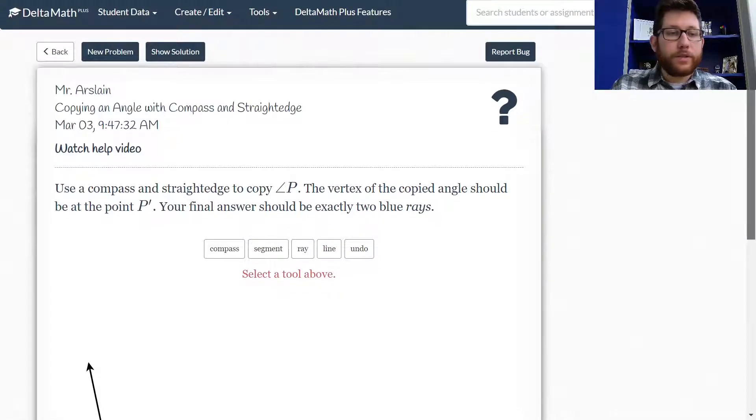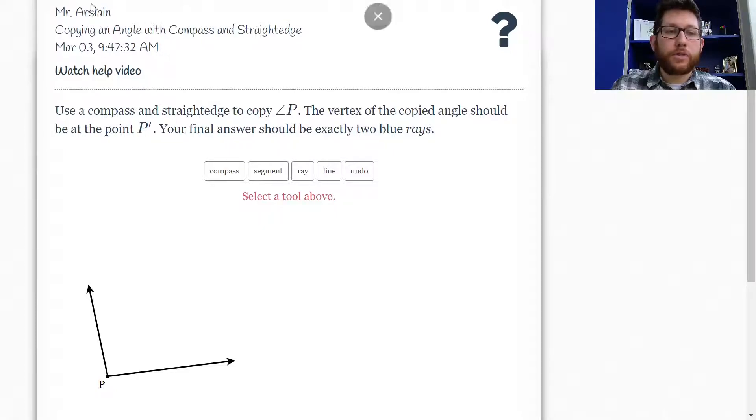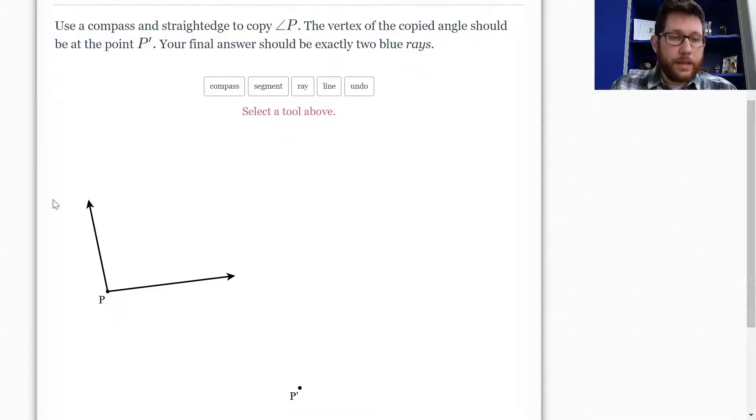So what we want to do is we want to copy an angle. So that one's pretty straightforward. They're going to give us this angle P and what we need to do is create an angle that's the same size. Now it doesn't have to be going the same direction, but it does need to be the same size as this angle P. And we're going to put it down here at P prime.